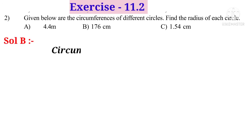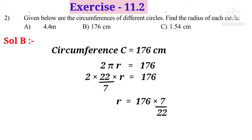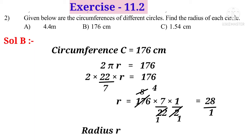Solution (b): Circumference C equals 176 centimetres. Since C equals 2πr, we get 2 × (22/7) × r equals 176. Solving: r equals 176 × (7/22) × (1/2). On simplification, 22 cancels into 176 giving 8, and 2 cancels into 8 giving 4. So r equals 4 × 7 equals 28 centimetres.